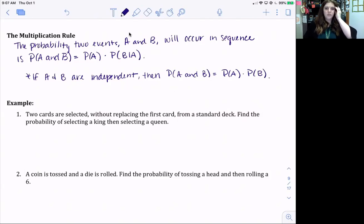So looking at the first example, two cards are selected without replacing the first card from a standard deck. Find the probability of selecting a king and then selecting a queen. So right here, we said without replacing the first card, so that means that it's dependent.